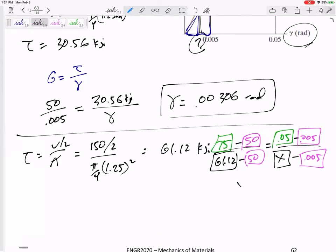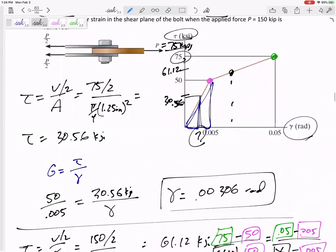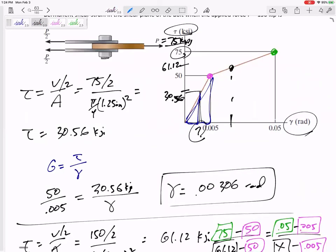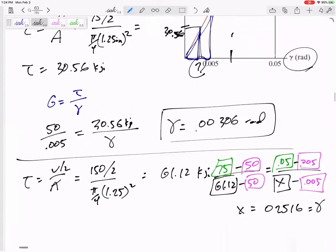So I've got x is 0.02516. That is the strain while up here, while it is being loaded with that 150. But that's not what it asks for. It asks for after it's unloaded, what is the permanent deformation?